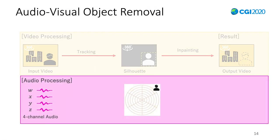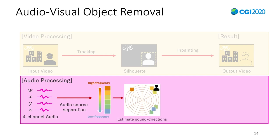This is audio processing. We use 4-channel audio data. Firstly, the input is separated into several frequency beams. Then, the direction of each frequency beam is estimated. Compared with visual tracking data from video processing, the target sound is identified. Finally, the identified sounds are removed and inversed back into 4-channel audio data.